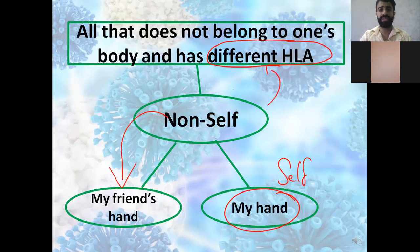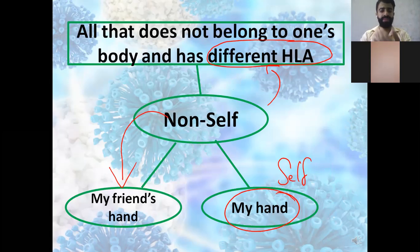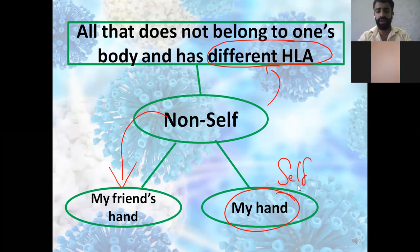The non-self is defined as all that doesn't belong to one's body and has different HLA. For example, my friend's hand, my father's hand, my mom's kidney — all classified as non-self since they don't belong to my body. The non-example of non-self would be the self: my hand, my liver, my lungs, my nose, my skin, and so on.